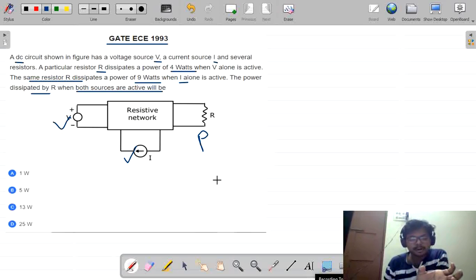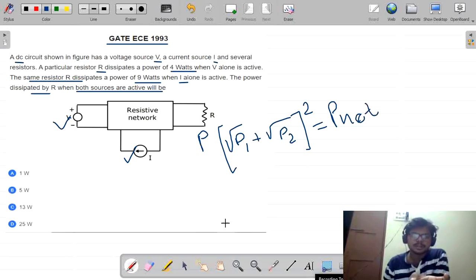But when there is a combination of powers, we will write it as square root of P1 plus square root of P2 whole square. It is the net power. It is the process which we need to do.